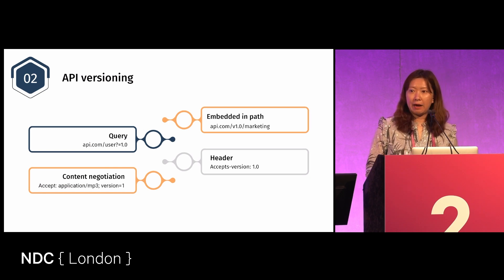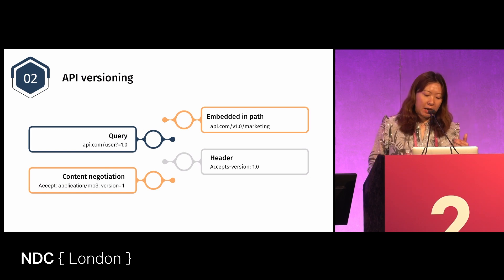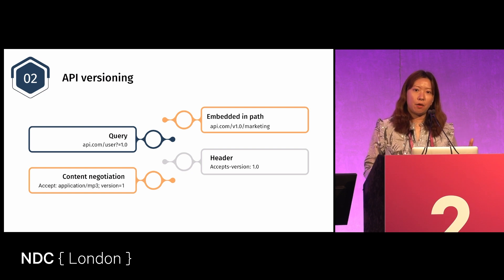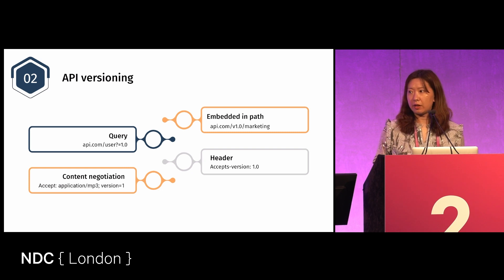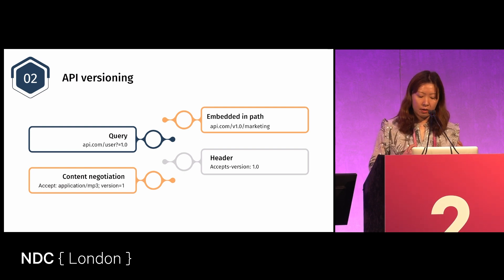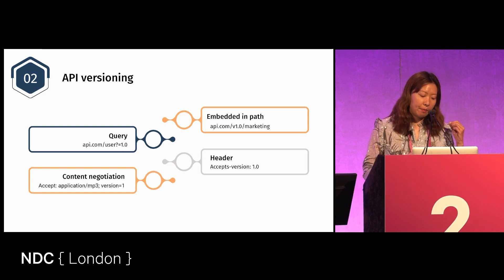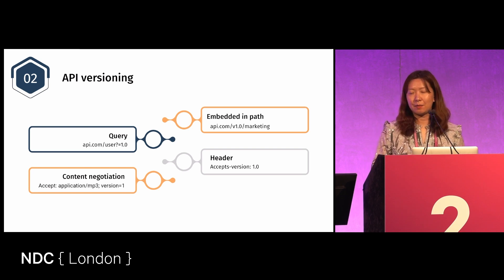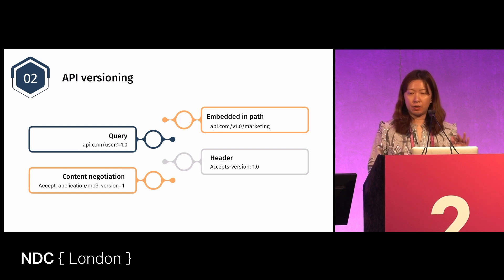When you design an API, think about versioning as well. This might be something you design before the project starts, but it might also be something you want to do during the project — maybe you want to introduce a new version of the API. Think about how to version it: can I use a query parameter? Should I use content negotiation? Do I embed it in the path, or do I add it in the header? Make sure you choose one versioning strategy and don't mix things up, at least within one version of your API. Follow one strategy through.